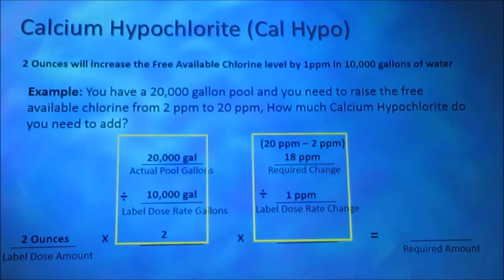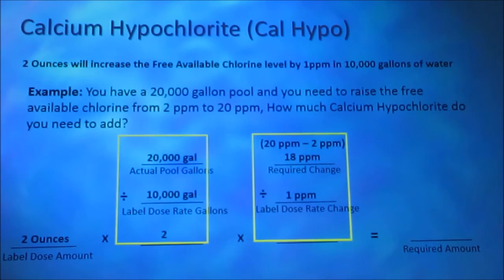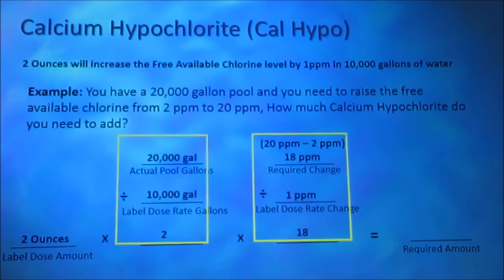We then take our required change and divide that by our label dose rate change. Our required change is 18 parts per million. Our label dose rate change is 1 part per million. 18 divided by 1 is 18. We want to increase the chlorine level by 1 part per million 18 times.